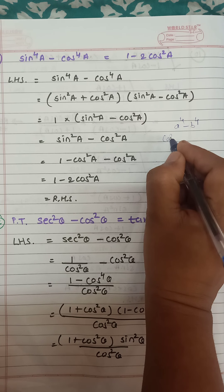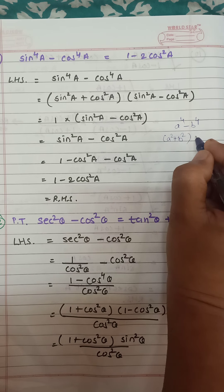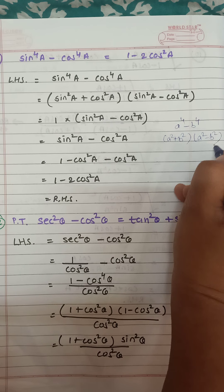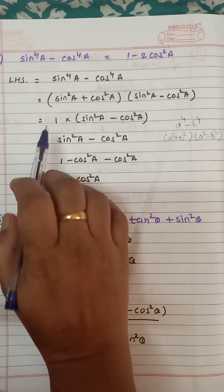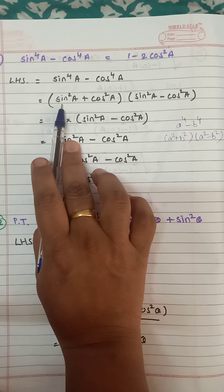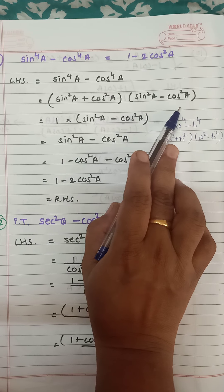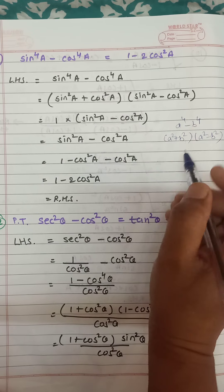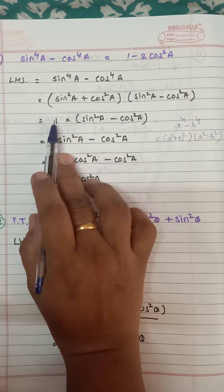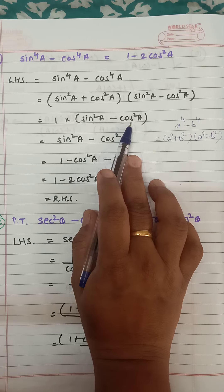We write a⁴ minus b⁴ as (a² plus b²)(a² minus b²). Same way here: (sin²a plus cos²a)(sin²a minus cos²a). The value of sin²a plus cos²a is 1, so only sin²a minus cos²a is left.